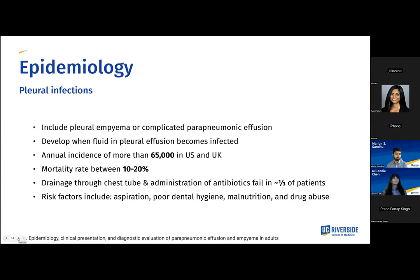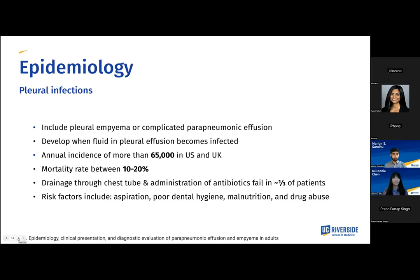Going into the epidemiology, we have pleural infections which include pleural empyema or a complicated parapneumonic effusion. These develop when fluid in the pleural effusion is infected. According to our paper, we have an annual incidence of more than 65,000 cases in the US and the UK, with a mortality rate of between 10 to 20 percent. Unfortunately, drainage through chest tube and administration of antibiotics fails in roughly a third of patients. Risk factors include aspiration, poor dental hygiene, malnutrition, and drug abuse.